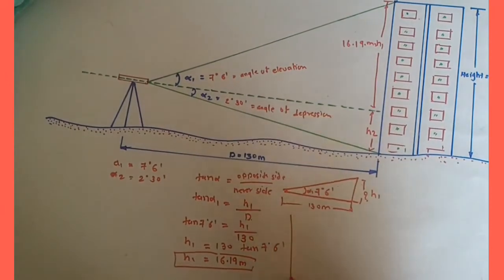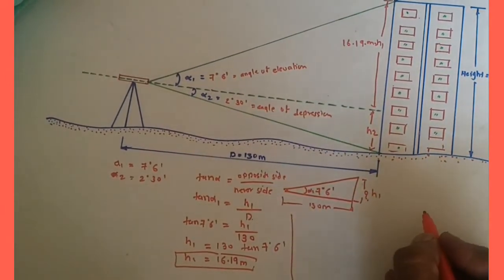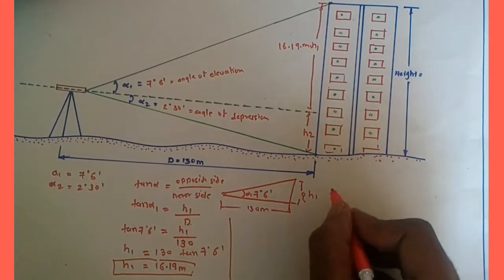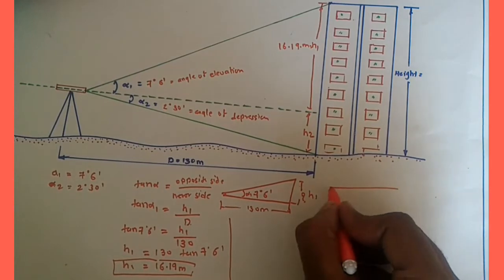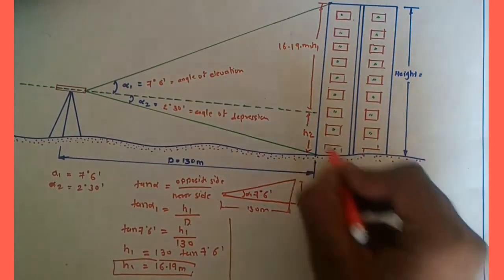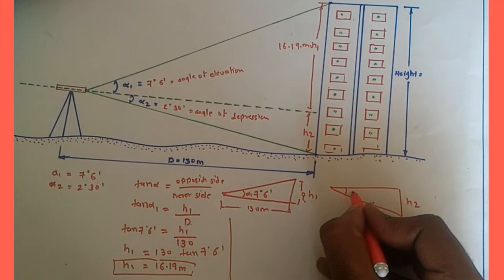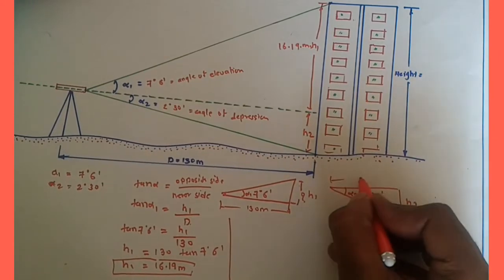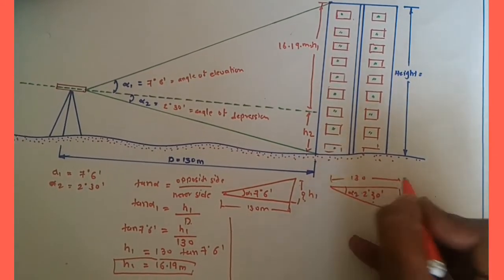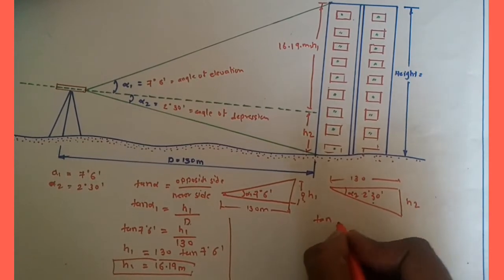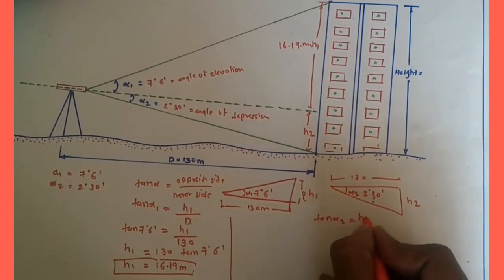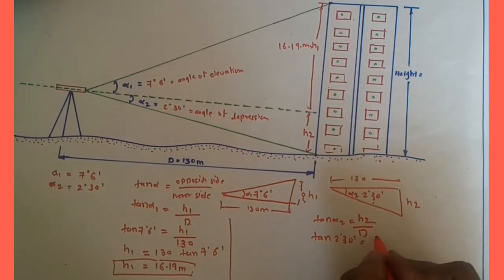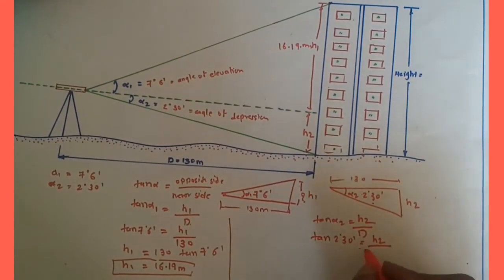Similarly, we are going to find h2. Draw another figure for h2: this is h2, this angle is alpha two — two degrees and 30 minutes — and this distance is the same 130 meters. Again we apply tan alpha two equals h2 over d.